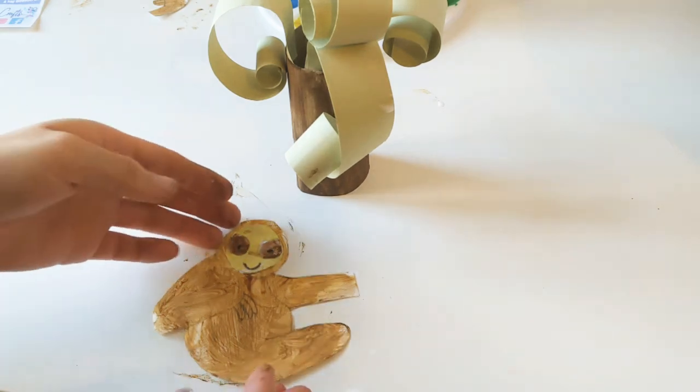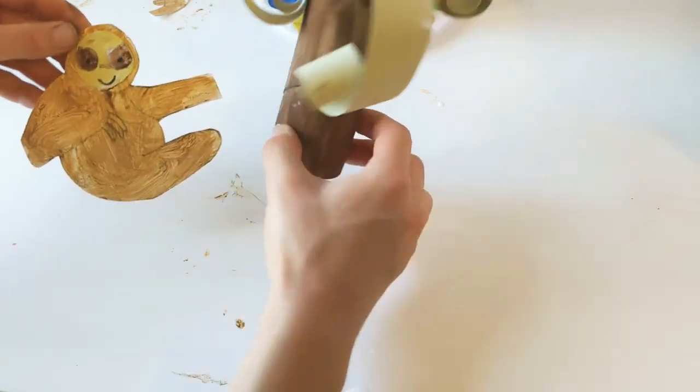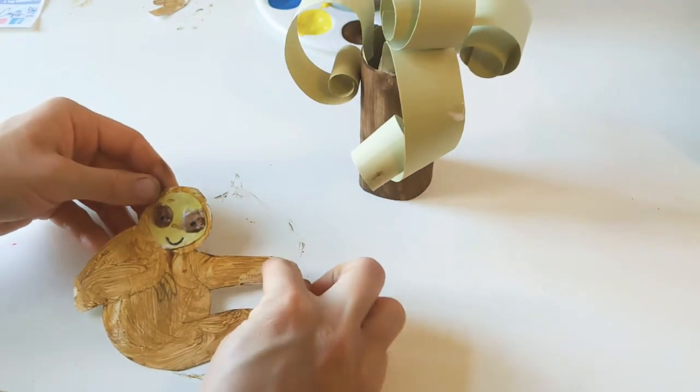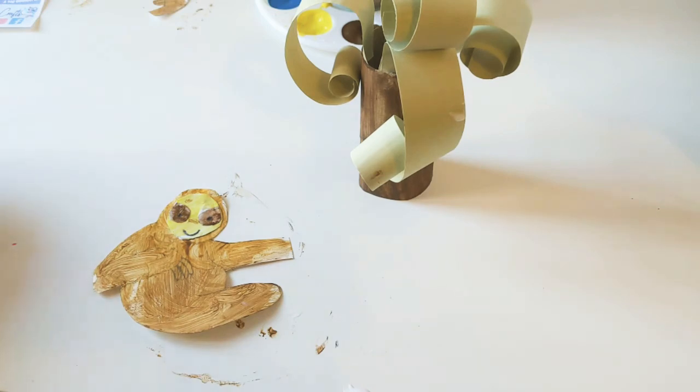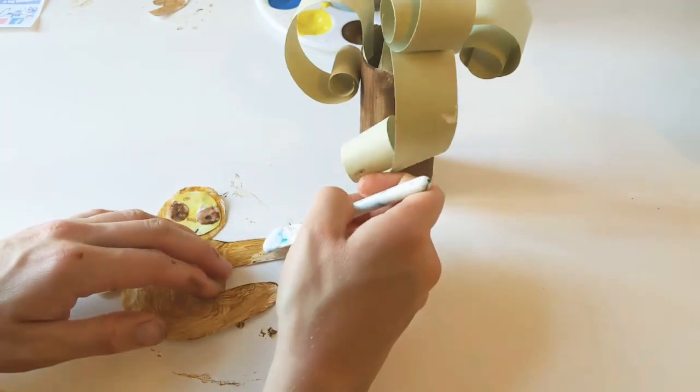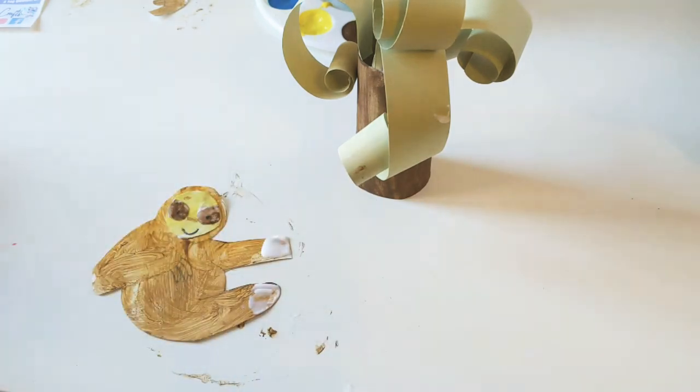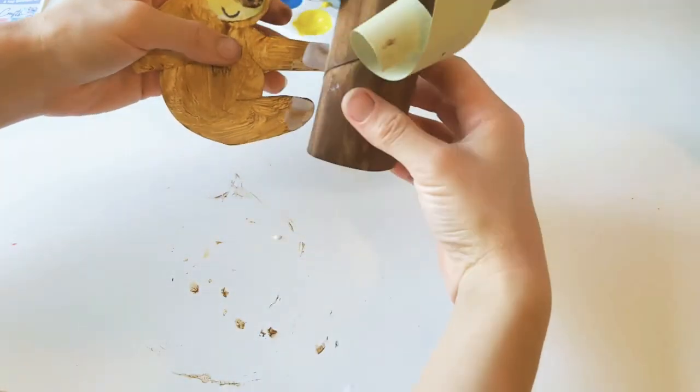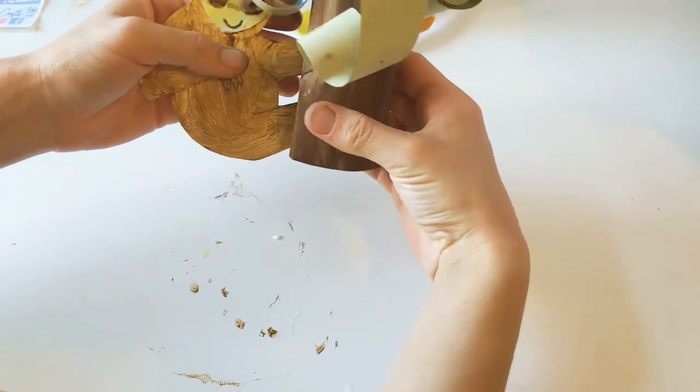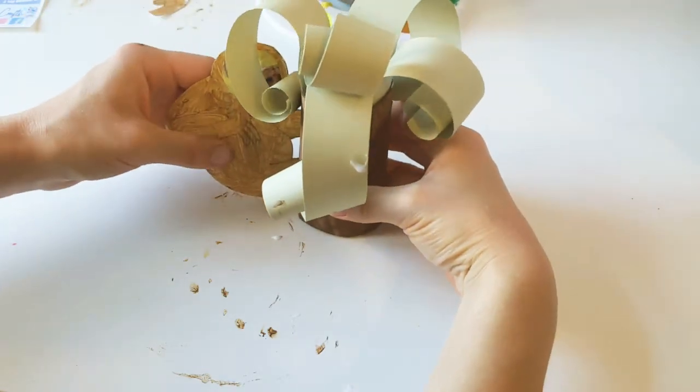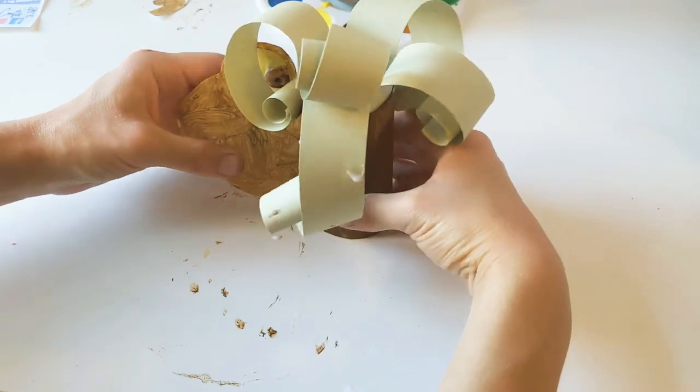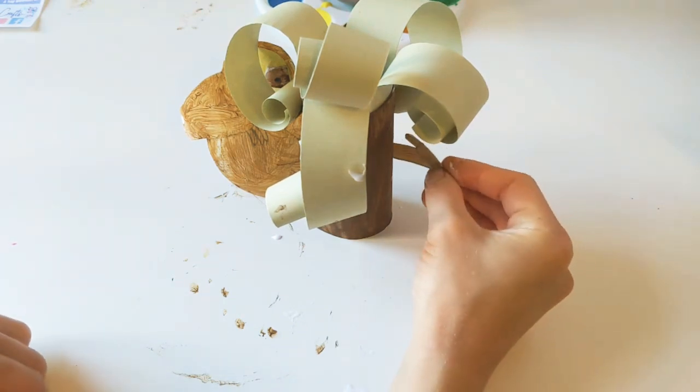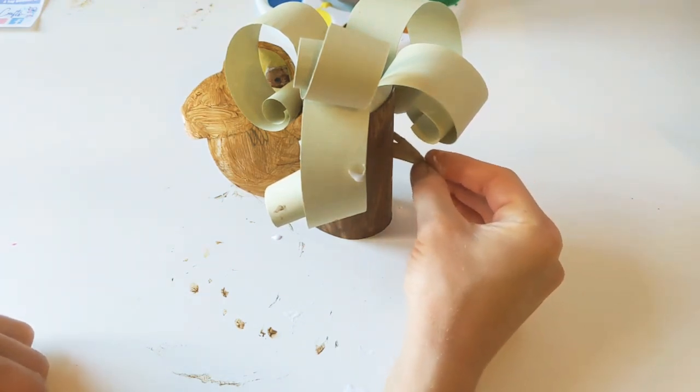Right, now to stick this one on, we're going to stick our little Sid the Sloth onto our tree a little bit like this. So what we're going to do is we're just going to put glue on the edges just here. And then we just stick this to the back of our little tree. It is going to take a couple of minutes for the glue to dry. I'm just going to leave him there like that.